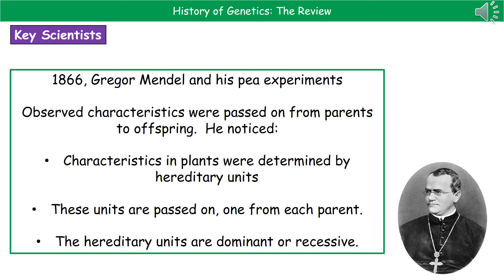He made three key observations. The first is that characteristics in plants were determined by what he referred to as hereditary units, and that those units were then passed on from each parent — one from each going into the offspring. And finally, that the hereditary units could be either dominant or recessive. He worked that out by doing a whole load of experiments with peas, looking at green features, yellow features, whether they were wrinkled or non-wrinkled.